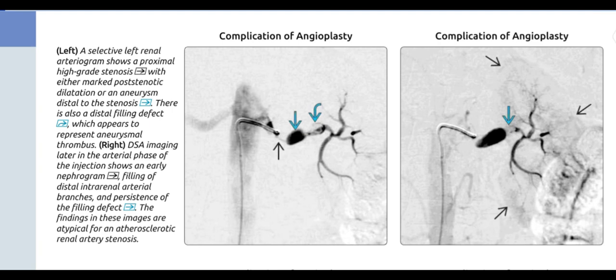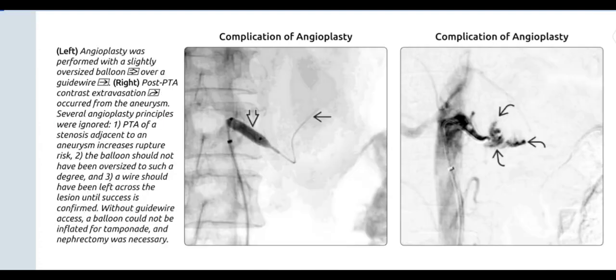A selective left renal arteriogram shows a proximal high-grade stenosis with either marked post-stenotic dilatation or an aneurysm distal to the stenosis, and also a distal filling defect appearing to represent aneurysmal thrombus. DSA imaging later in the arterial phase shows an early nephrogram, filling of distal intrarenal arterial branches, and persistence of the filling defect — findings atypical for atherosclerotic renal artery stenosis. Angioplasty was performed with a slightly oversized balloon over a guidewire; post-PTA contrast extravasation occurred from the aneurysm. Several angioplasty principles were ignored: PTA of a stenosis adjacent to an aneurysm increases rupture risk; the balloon should not have been oversized to such a degree; and a wire should have been left across the lesion until success is confirmed. Without guidewire access, a balloon could not be inflated for tamponade, and nephrectomy was necessary.